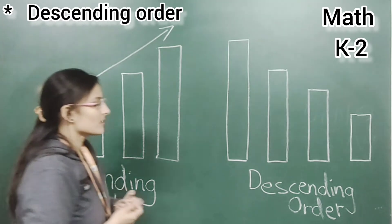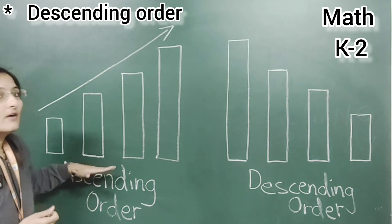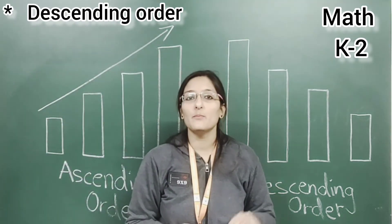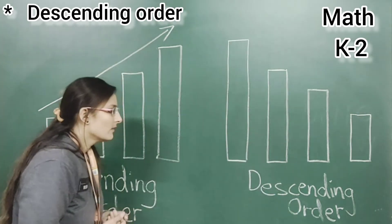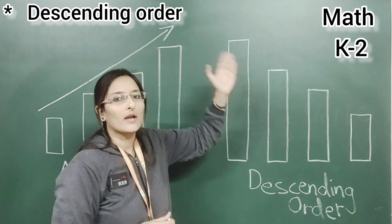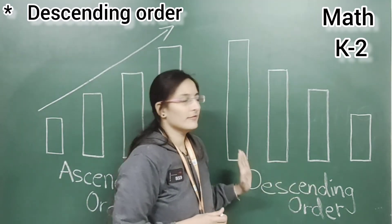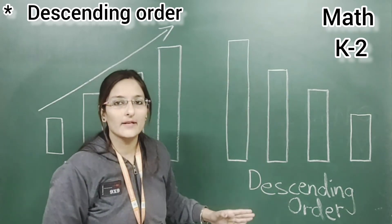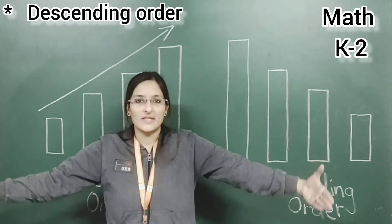Now what is descending order, kids? In this we are starting from the biggest. When we are doing ascending order, we are doing forward counting — starting with 0, 1, 2, 3, 4, and so on, in a straight manner. But when we are doing descending order, we have to go to backward counting. From 50 we will start, because we are going to learn up to 50 only in descending order. We have to arrange numbers from biggest to smallest.